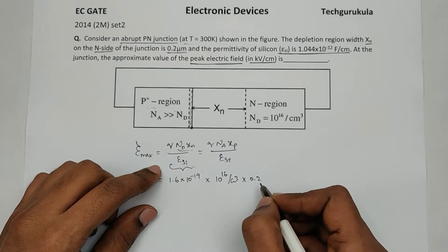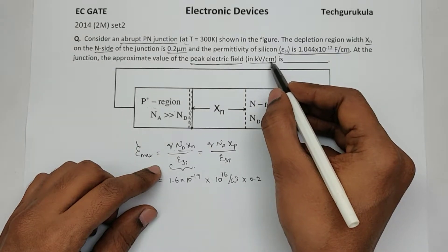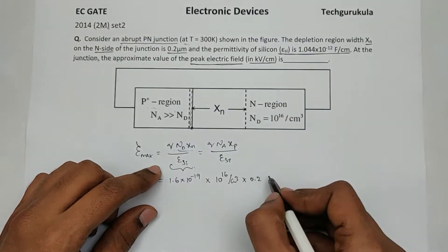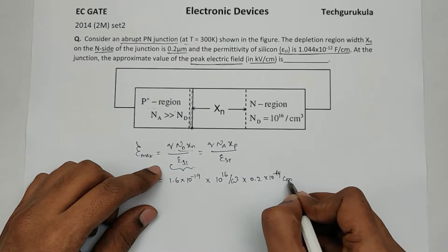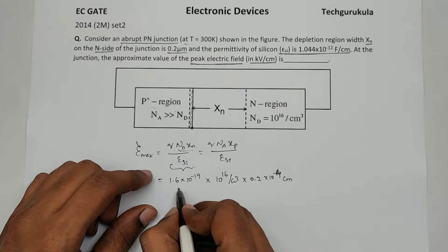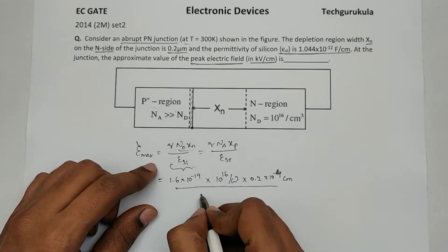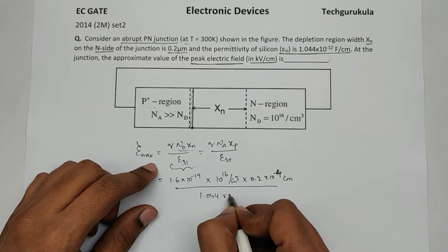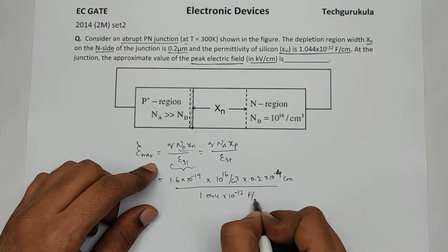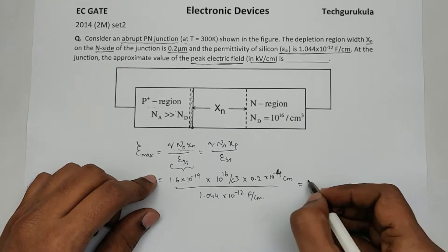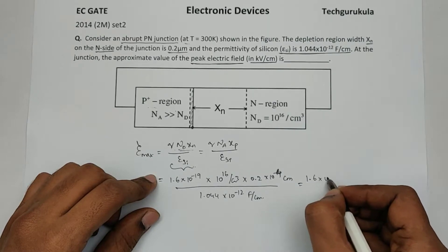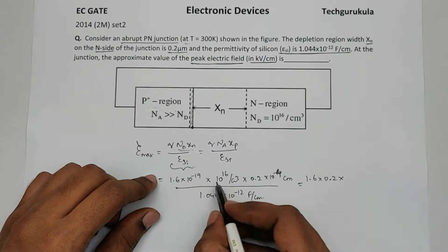0.2 micrometers, but everything is going to be in centimeters even the answer is. So I am going to write this into 10^-4 centimeters. I am converting the micrometers into centimeters. Now epsilon, 1.044 times 10^-12 farad per centimeters.